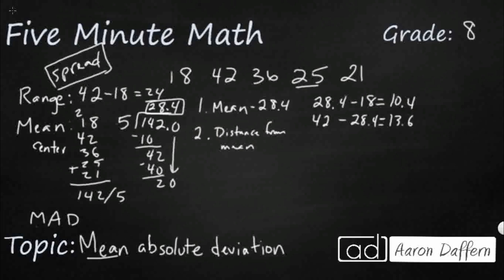We're going to do that for all of this. So 36 minus 28.4. So that's going to be 7.6. 28.4 minus 25. That is 3.4. And then 28.4 minus 21. That is 7.4.